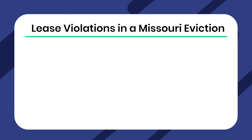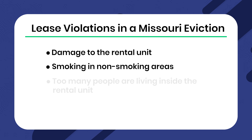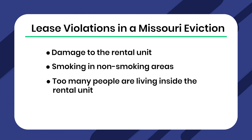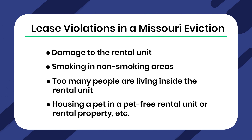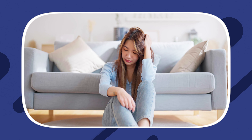There is no specific notice period for this type of eviction because it depends on what was indicated in the lease, if anything. Lease violations in Missouri eviction include damage to the rental unit, smoking in non-smoking areas, too many people living inside the unit, and housing a pet in a pet-free property. The landlord may begin filing an eviction if the tenant remains inside the rental unit after the given notice period. For your own Missouri lease agreement, visit DoorLoop's form page to download a template, linked in the description below.